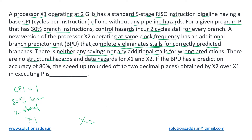The branch prediction unit has a prediction accuracy of 80 percent. In 80 percent of cases it correctly predicts branches and there will be no stall cycles. In the remaining 20 percent, it incorrectly identifies branches, meaning two stall cycles will be required for those cases.